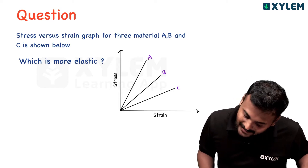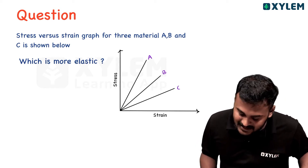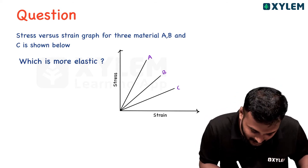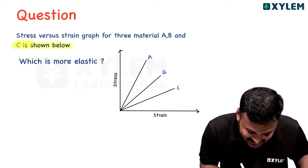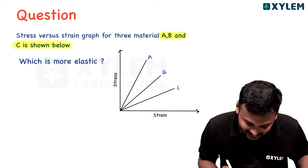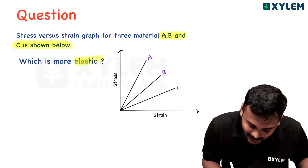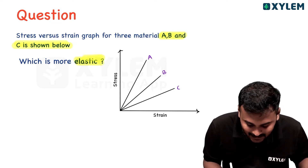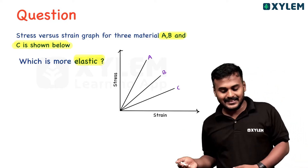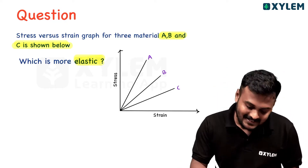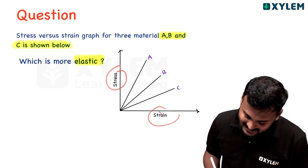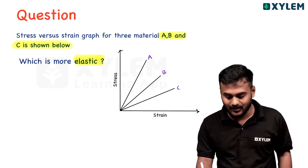The stress-strain graph of three materials A, B, and C is shown. This is how it looks — x-axis is strain and y-axis is stress. We need to study the path carefully.